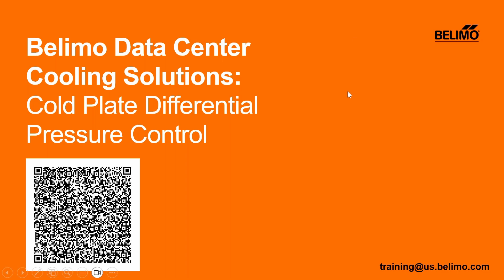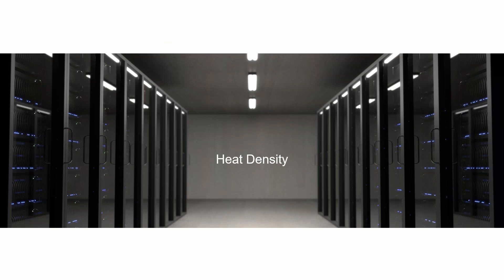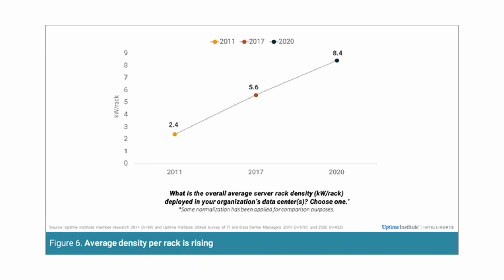If you joined us along the way on our presentations, you know we're always talking about heat density — how are the heat densities changing? What are all these chip manufacturers doing that we have to respond to? I like to always harken back to the Uptime Institute's data, which showed what happened during the 2010s. Here is average heat density per rack measured in kilowatts. In 2011, survey respondents reported somewhere around 2.5 kW per rack, and by the end of the 2010s we were at 8.4 kW per rack — about three and a half times as much heat density over a 10-year period.